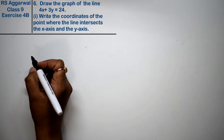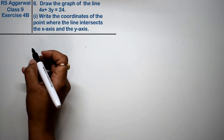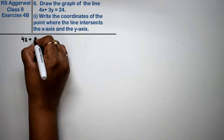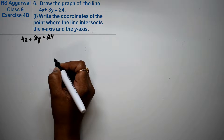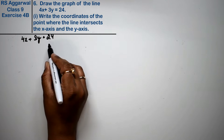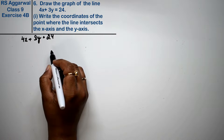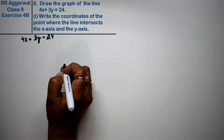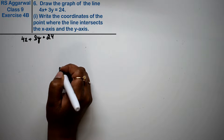Let's do question number 8 of exercise 4b on linear equations in two variables. Question 8 is: draw the graph of the line 4x plus 3y equals 24. Make the line on the graph and write the coordinates of the point where this line intersects the x-axis and y-axis. Then use this graph to find the area of the triangle formed by the graph line and the coordinate axes.